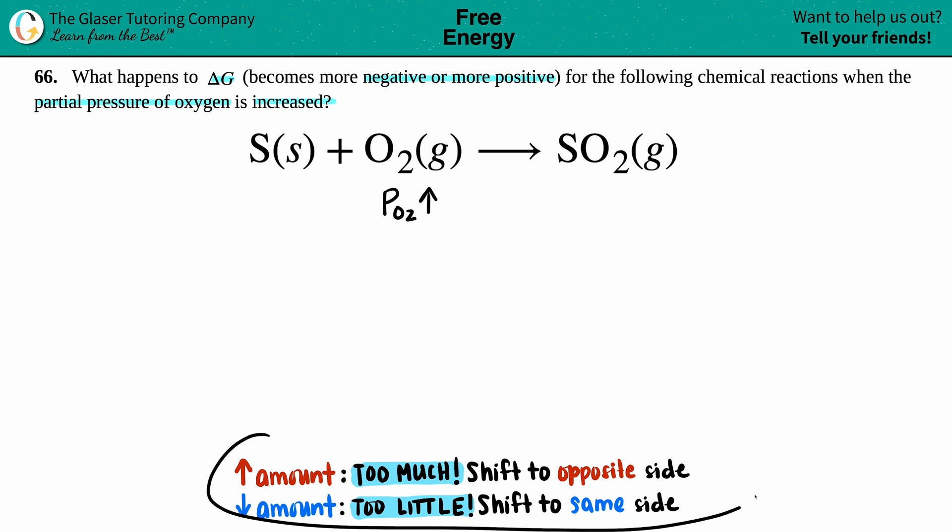Remember, whenever we're changing amounts of something, we're talking about Le Chatelier's principle. So I wrote down the list of what's going on here. Now in this case, whenever you're increasing something, you're increasing the amount. It's basically saying that you have too much, and for equilibrium purposes you've got to shift to get equilibrium back.